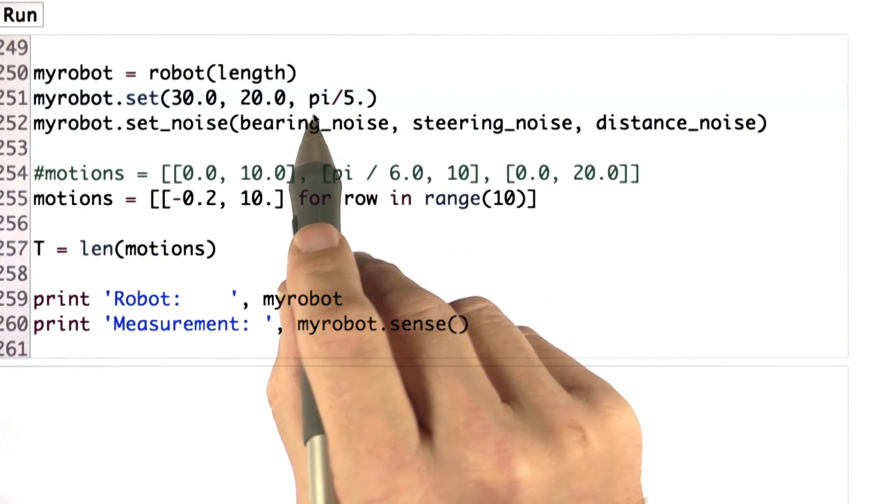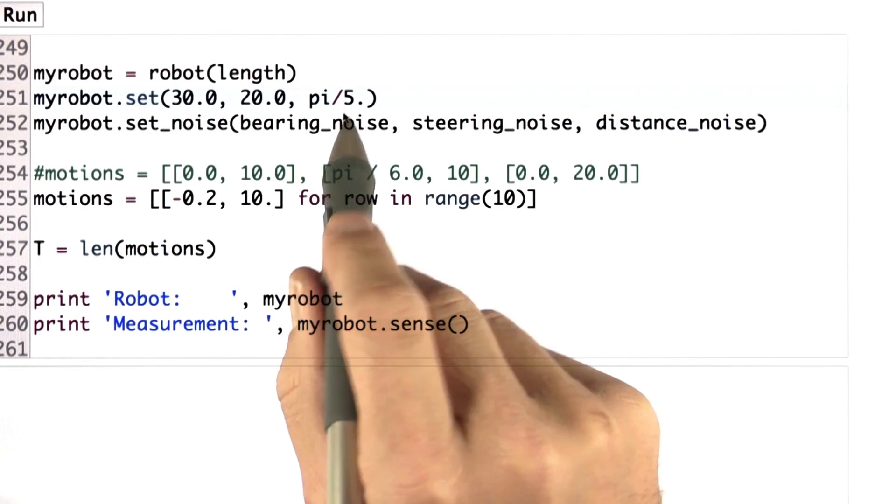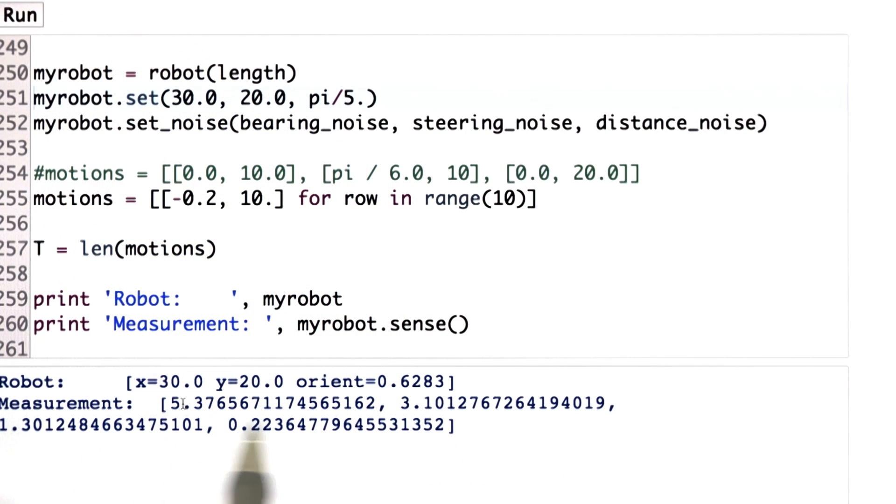If I change the initial orientation of the robot to be pi over 5, I now get my new robot coordinates over here, and my measurement vector outputs me very different values. And that's because this robot is now rotated, and therefore all the bearings to the landmarks do change. So it's 5.3, 3.1, 1.3, and 0.22. Implement a measurement function that gives me exactly those values.